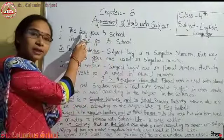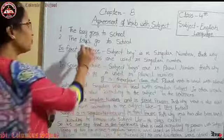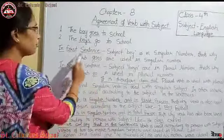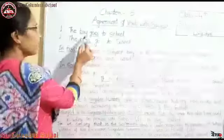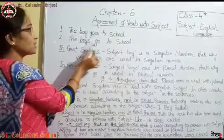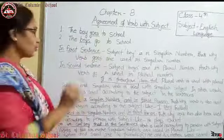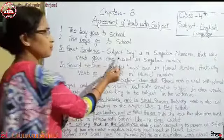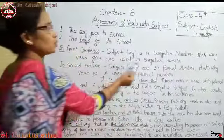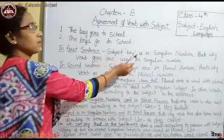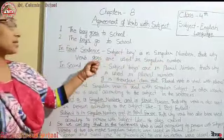यहाँ पर boy subject है, और goes verb है। First sentence में subject 'boy' singular number में है, that's why verb 'goes' singular number में use हुई है। Goes singular verb है, singular number के साथ use किया हुआ है।